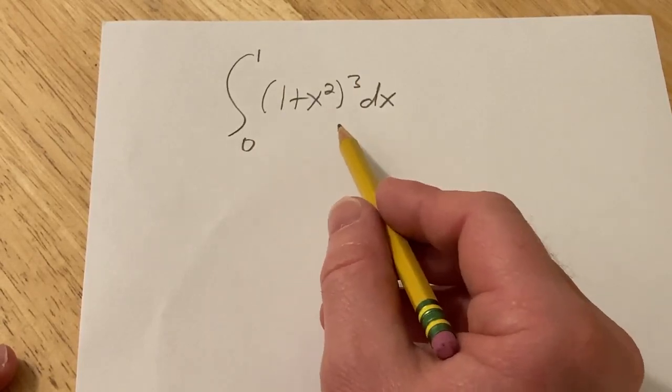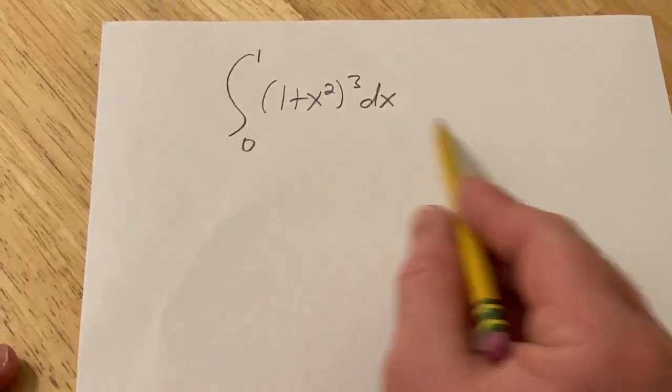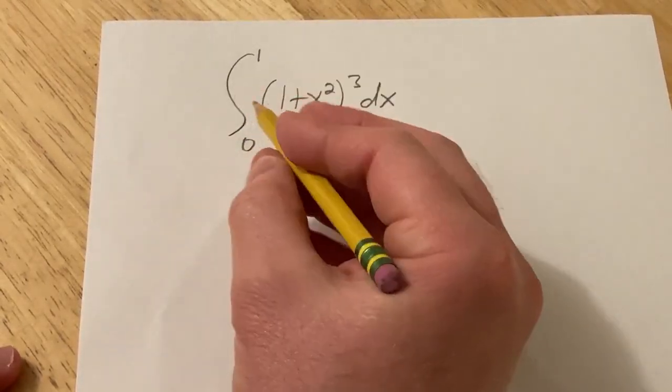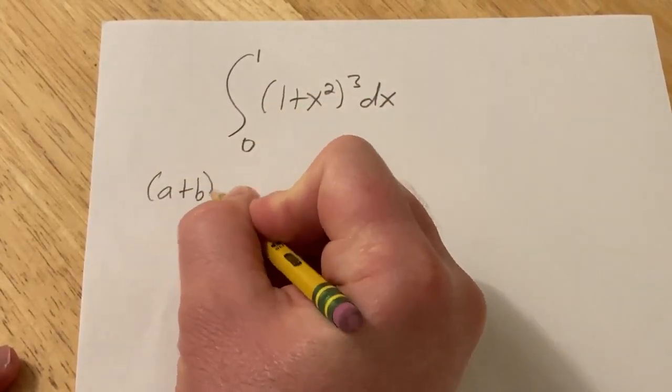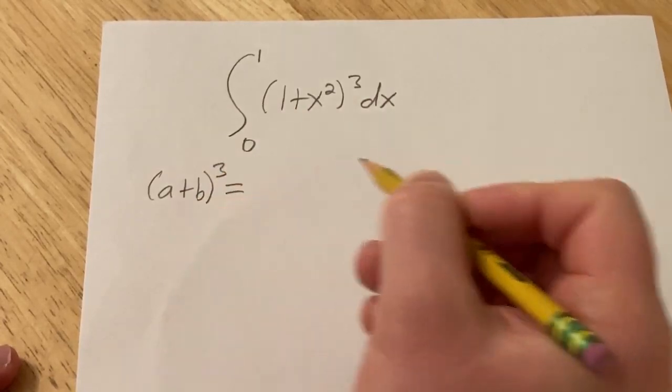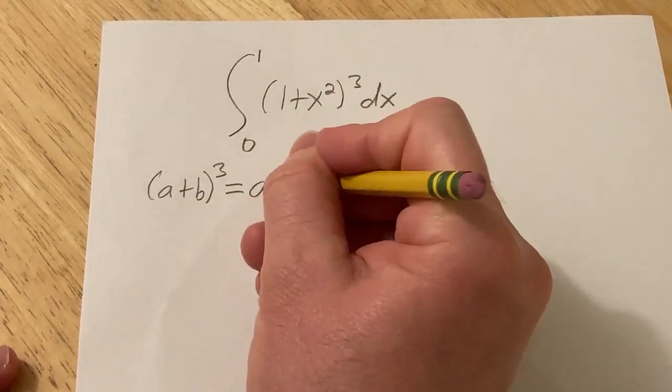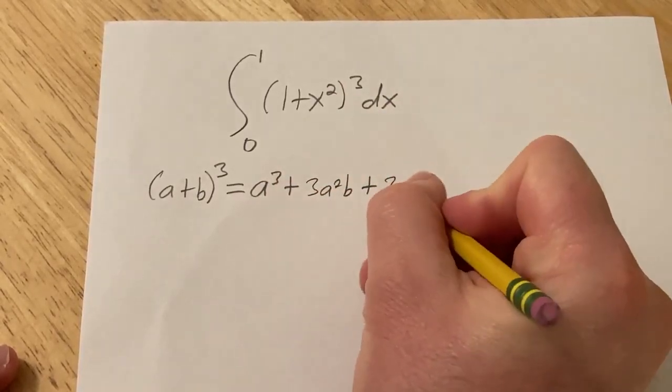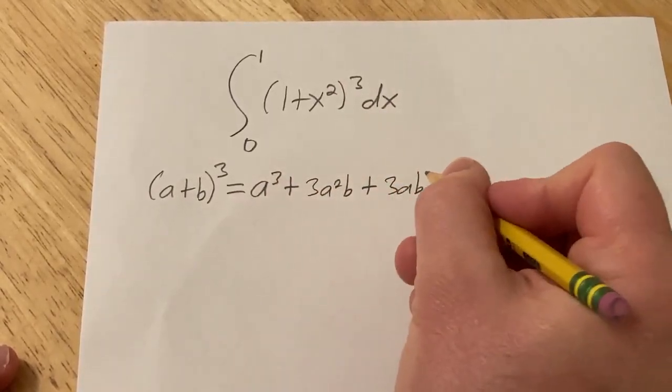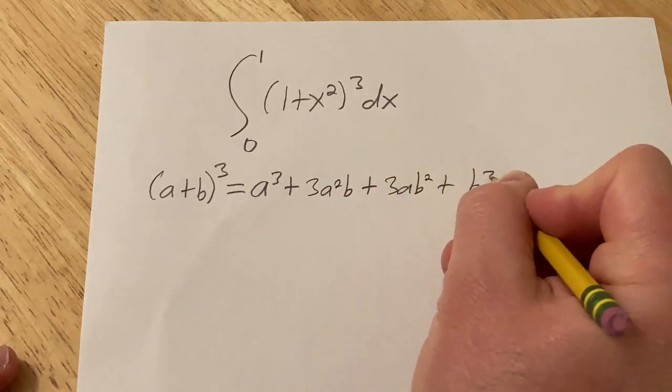So I'm thinking that maybe one way to do this would be to basically just multiply it all out. So there is a formula for an expression of the form a plus b quantity cubed. Basically that formula is a cubed plus 3a squared b plus 3ab squared plus b cubed.